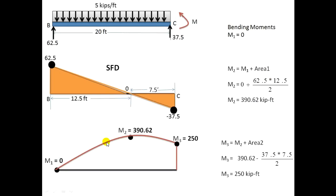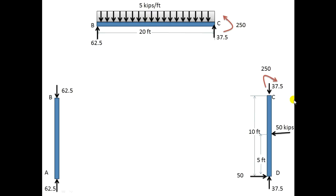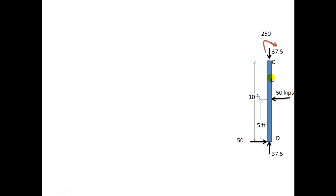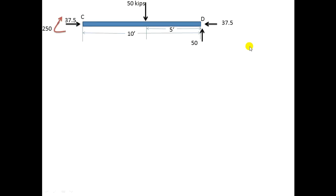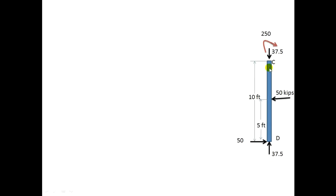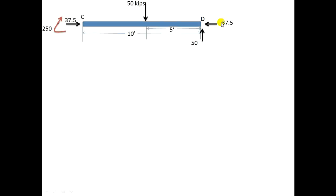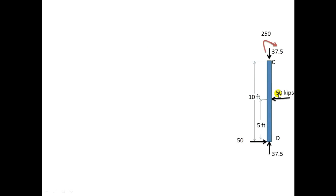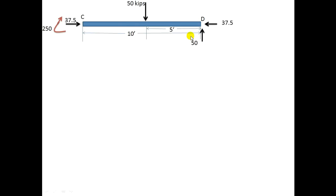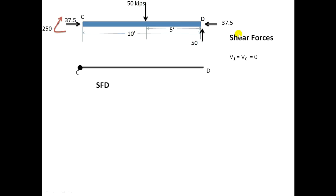Now I will draw the SFD and BMD for the CD member. For simplification I will rotate it to a horizontal orientation. After rotation, C is on the left and D is on the right. The 37.5 kN forces are now along the member (axial), and the 50 kN forces are perpendicular to the member (shear). The 250 kN·m moment at C is clockwise as before.